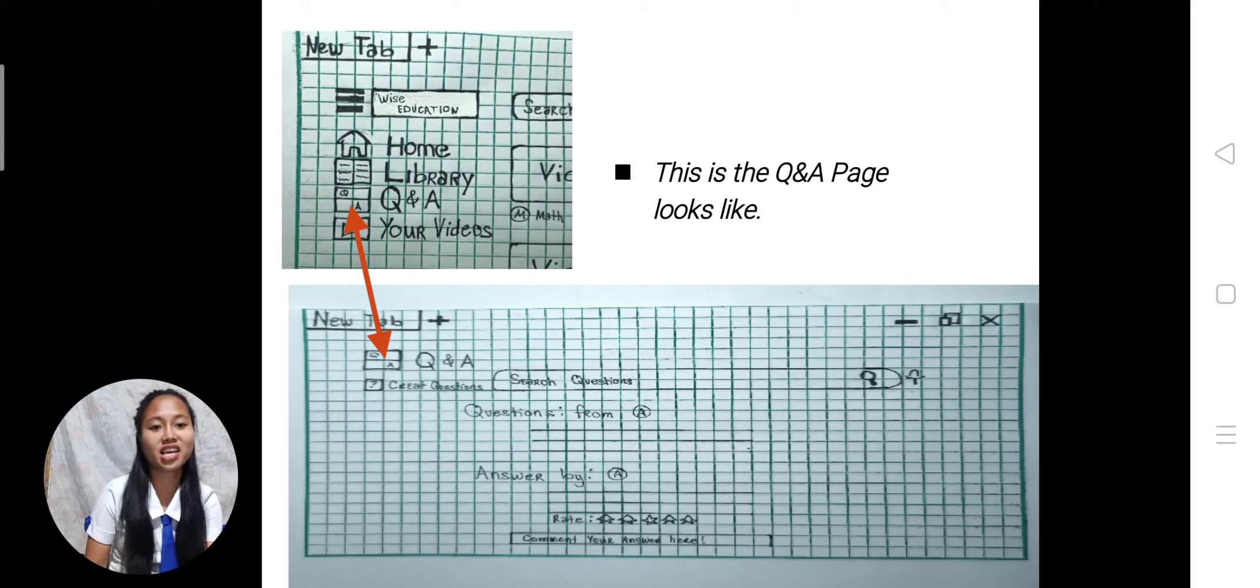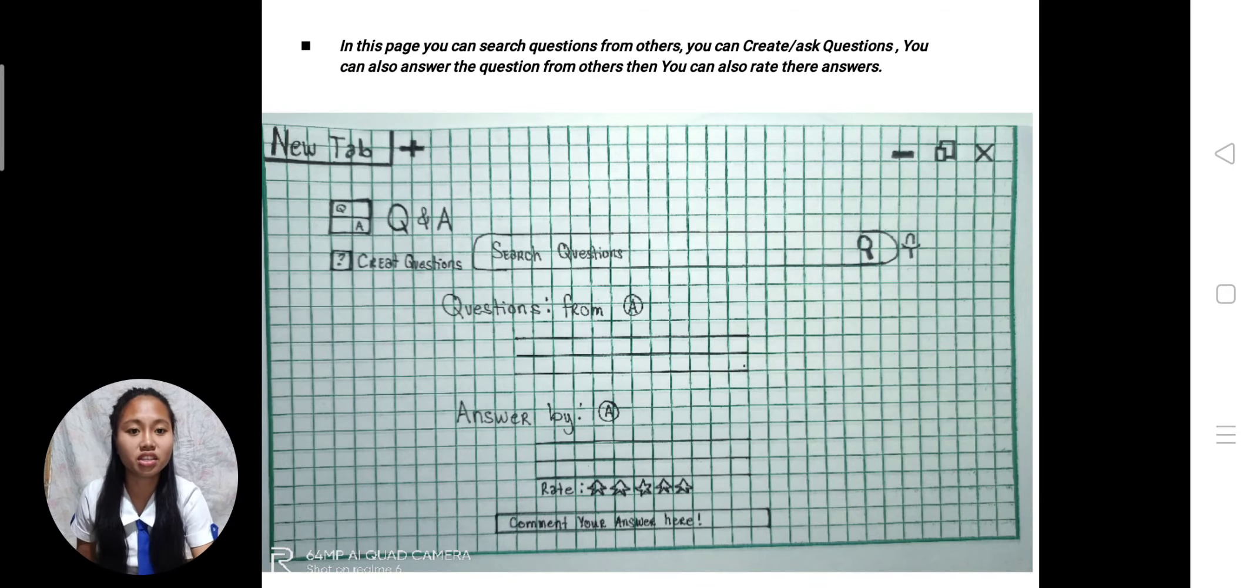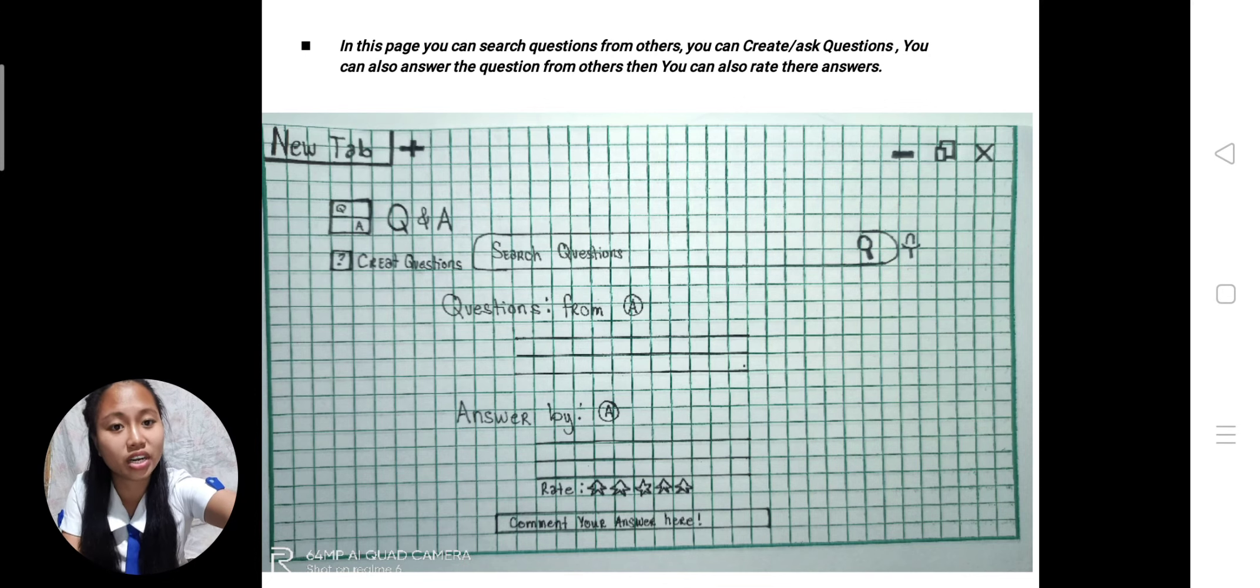This is the Q&A page. In this page you can create questions, especially if you're going to ask about assignments or need help. Then people who have answers can provide answers. You can search for other questions, and you will see the answers. If you can comment on the answer, you can comment on it. Then you can rate the answer. This is the Q&A.